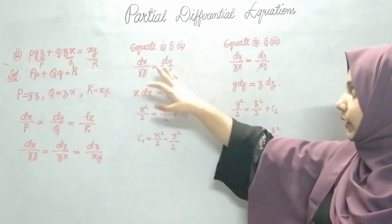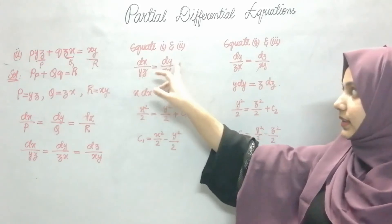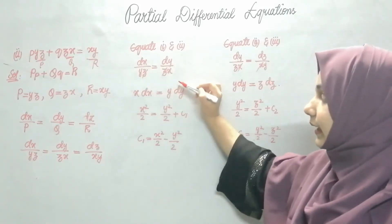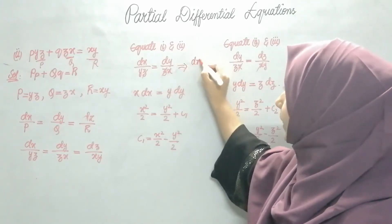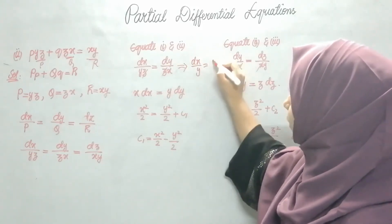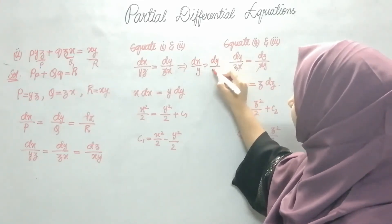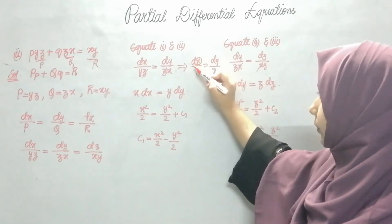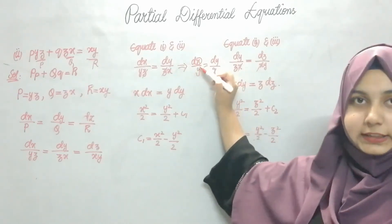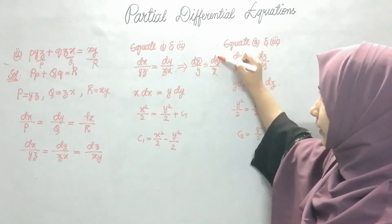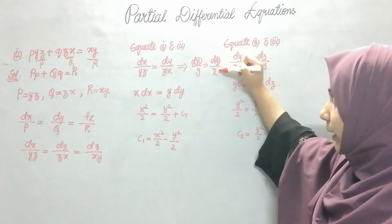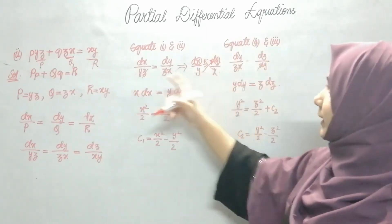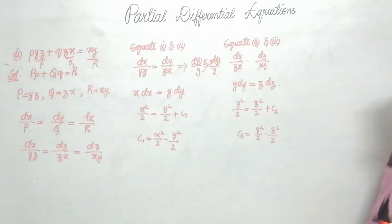I need to take any two members and integrate. I will take the first two: dx/yz = dy/zx. Here z and z cancel out, leaving dx/y = dy/x. Now I cross-multiply because I want to integrate with respect to x but have no x term on that side, and similarly for y. So: x · dx = y · dy.